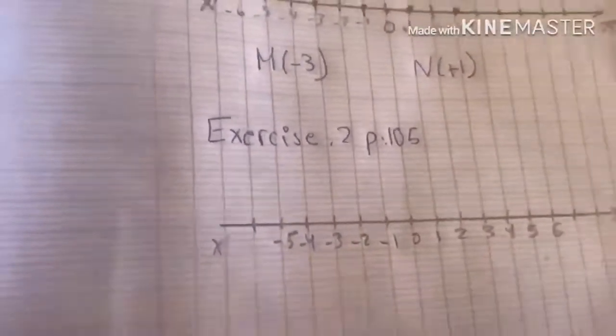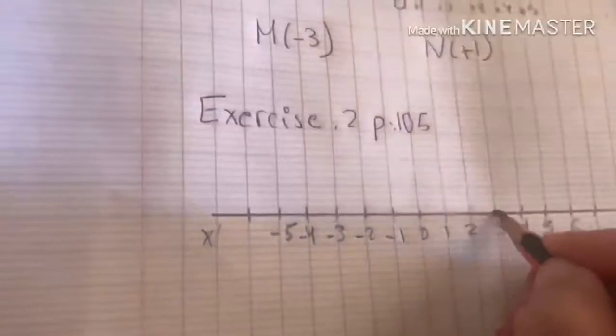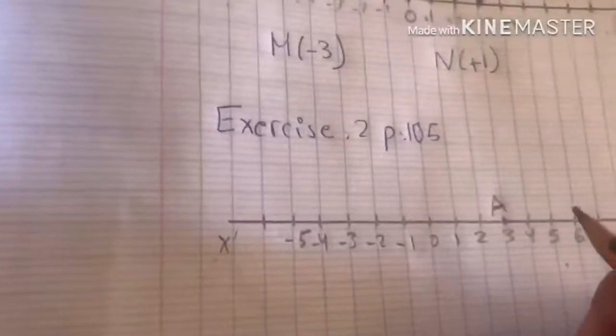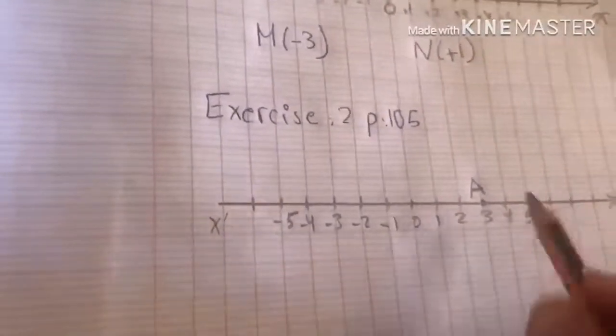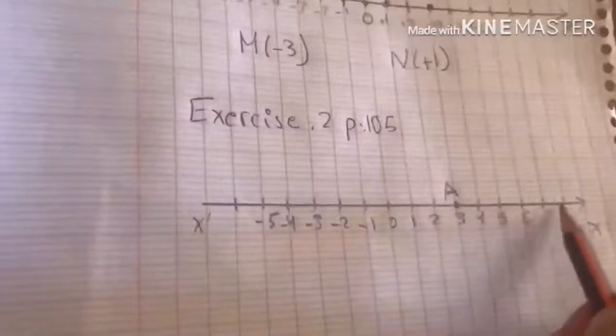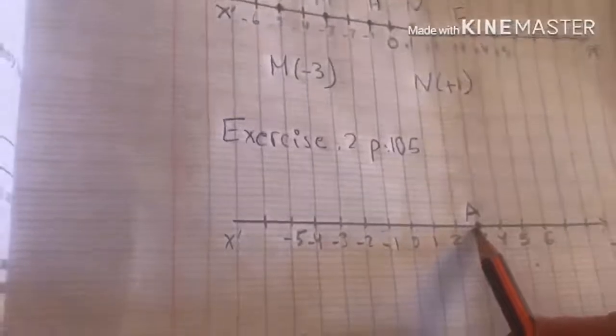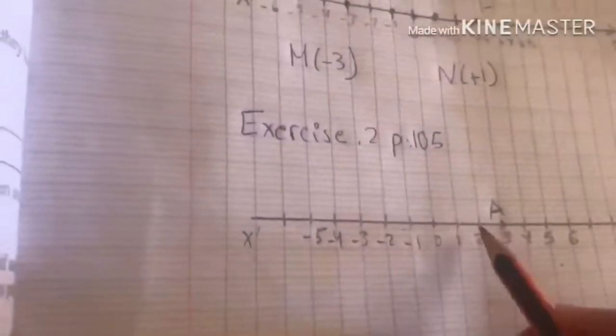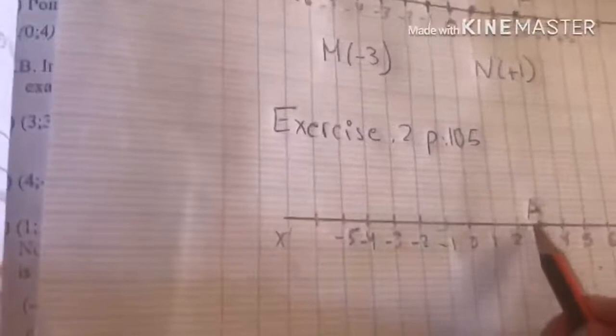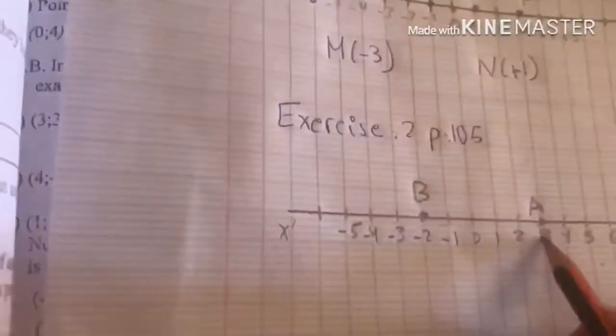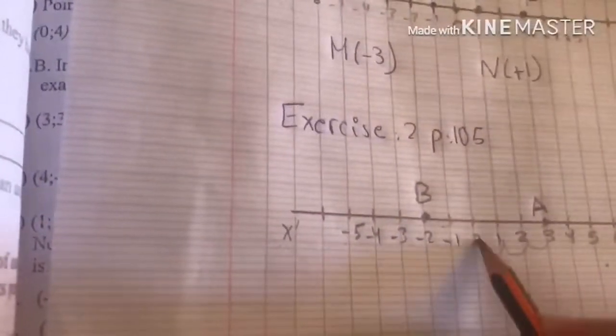Let's locate the point A positive 3. Here it's A. Locate the point B that satisfies AB equal 5. Should I go 5 this way or should I go 5 this way? Give me a condition. O is a point of AB. This means that O has to be between A and B. I'm forced to go 5 to the left. 1, 2, 3, 4, 5. So here it's B. You see, 1, 2, 3, 4, 5.